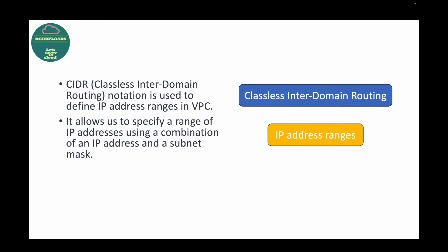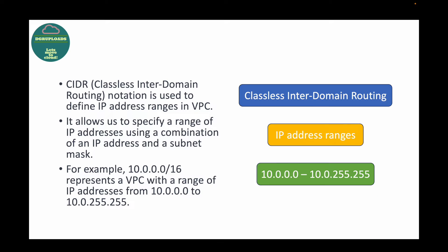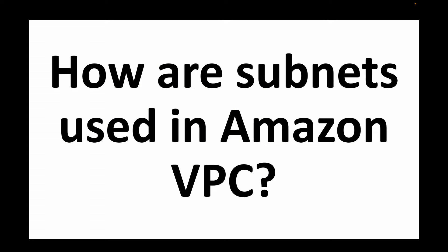CIDR allows us to specify a range of IP addresses using a combination of an IP address and a subnet mask. For example, 10.0.0.0/16 represents a VPC with a range of IP addresses from 10.0.0.0 to 10.0.255.255. So this is the range of IP addresses that we need, and you can define that by making use of CIDR — that's your IP address range.